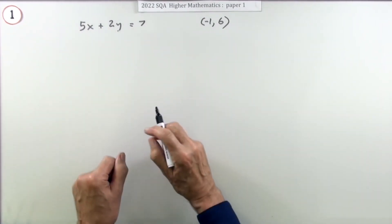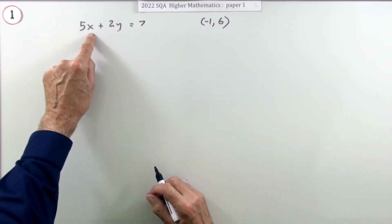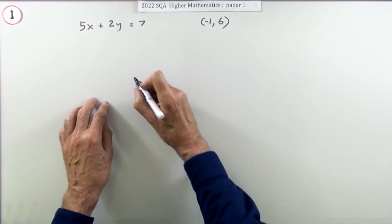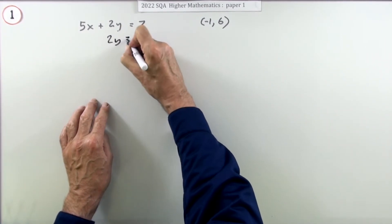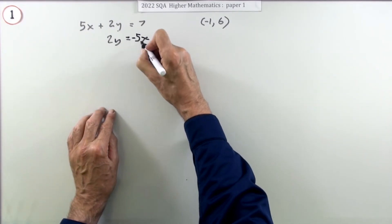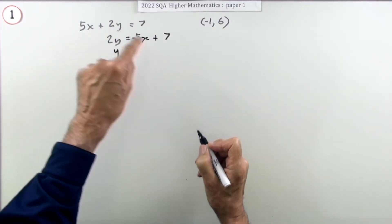So the first step is going to be: what's the gradient of this line? Now it's not the five - you don't go straight for the coefficient of x. It's only the coefficient of x if it's in the form of y equals mx plus c. So get it into the form of y equals mx plus c. Put the 5x across - it'll go across as a minus 5x - now divide everything by 2.